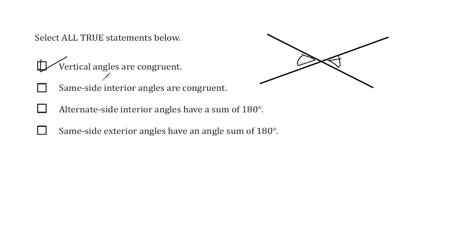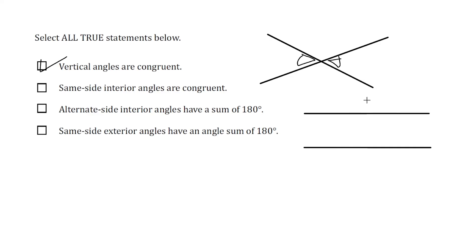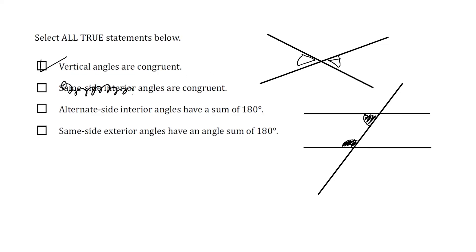The next statement reads: same-side interior angles are congruent. If you're not sure, draw two parallel lines and a transversal, then identify same-side interior angles. One angle is obtuse — greater than 90 — and the other is acute — less than 90 — so they are not equal in angle measure. They are not congruent, so this is a false statement and we should not select that choice.